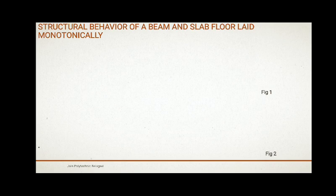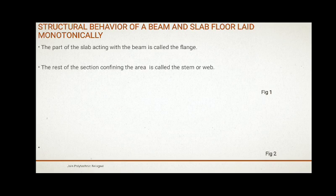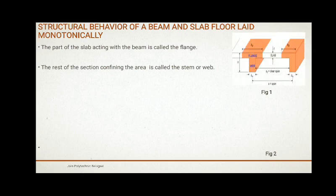Now coming to Structural Behavior of Beam and Slab Floor Laid Monolithically. Monolithically means they are cast at once and joined together. The slab in the T-Beam is the upper part or flange, and the beam is the web. In the figure you can see the flange, also called the slab, and the web, which is the beam.